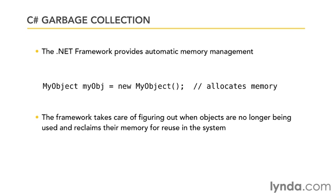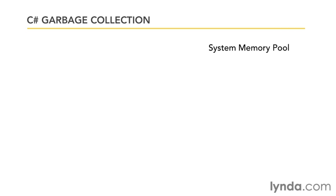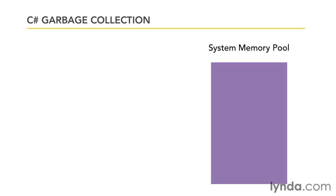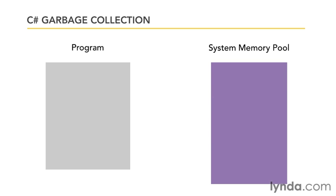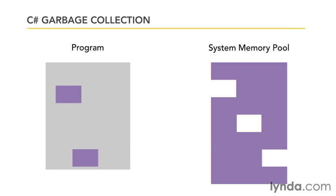Let's take a look at conceptually how this works. There's a big pool of memory available to the system — we can think of it as this big purple box you see right here. Your program is going to use this memory during the course of its operation. As your program runs, it's going to allocate blocks of memory, and those blocks are going to be taken out of the system memory pool and assigned to your program. Then your program will do whatever it does with that memory and all these objects.